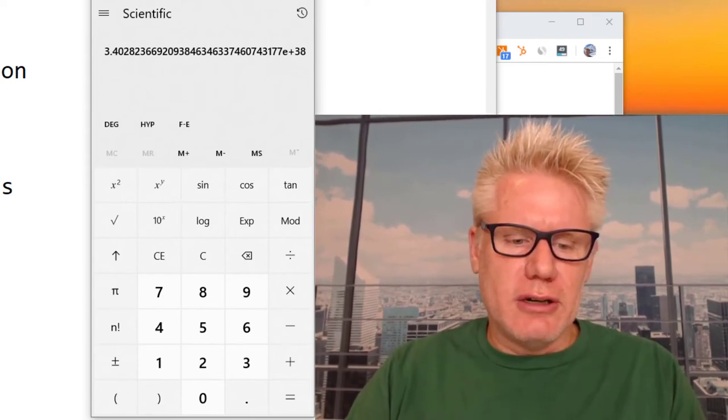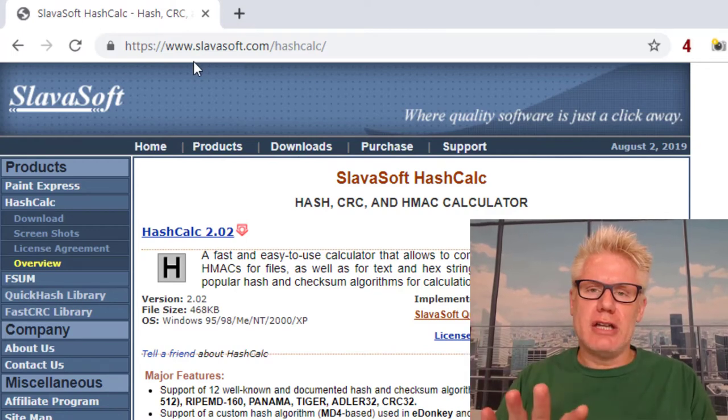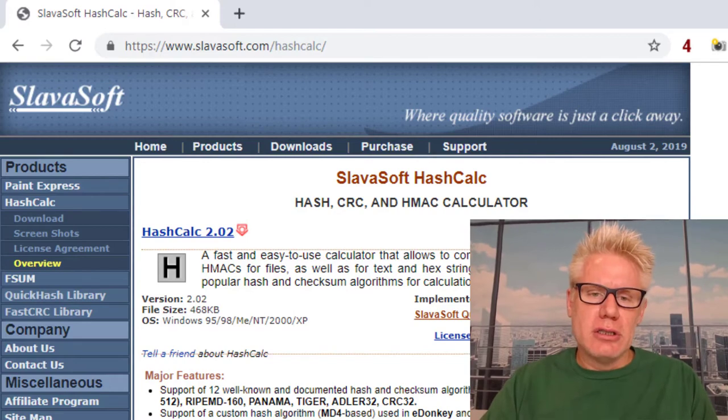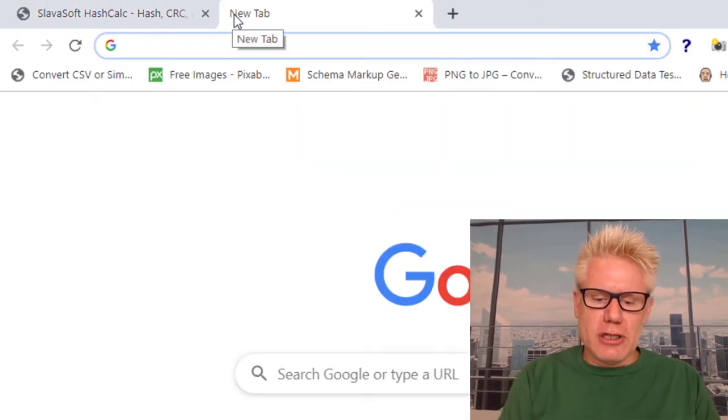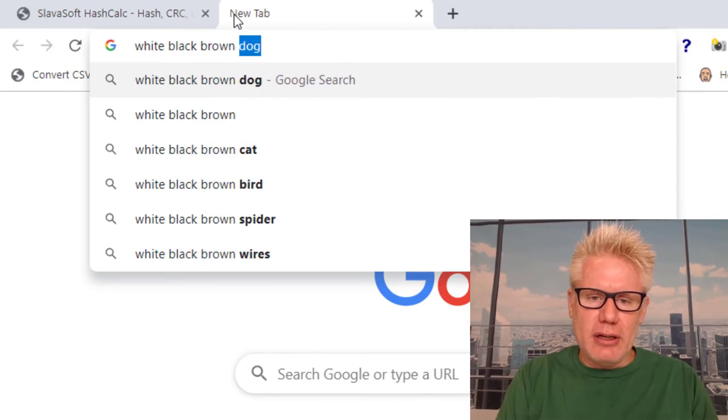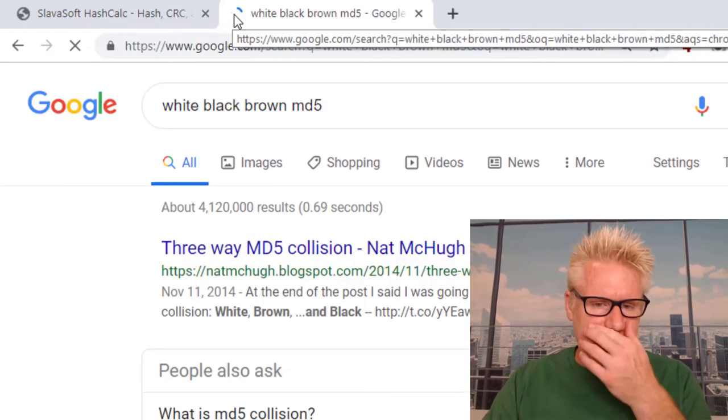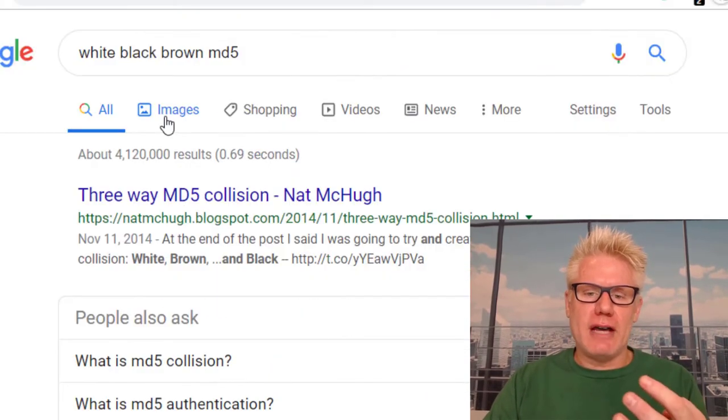So let's look at this here. And we're going to use this tool called hash calc to do the calculation. Hash calc is one of my favorite hashing calculators. So if we just search for white, black, and brown MD5, we should find what this guy did. Three-way MD5 collision, Nat McHugh is the dude's name.